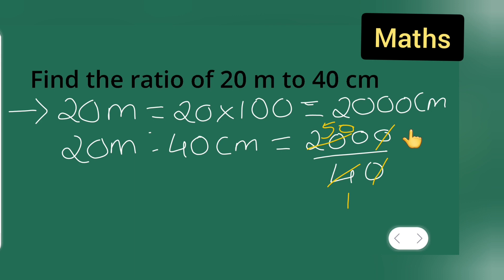So answer is 50 upon 1. Now you have to write this in ratio form. However, I'm going to write this in ratio form now. Write this is equal to 50 ratio 1.